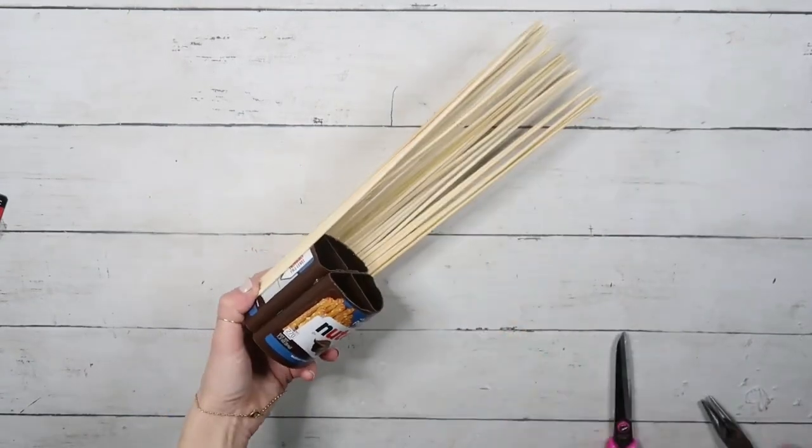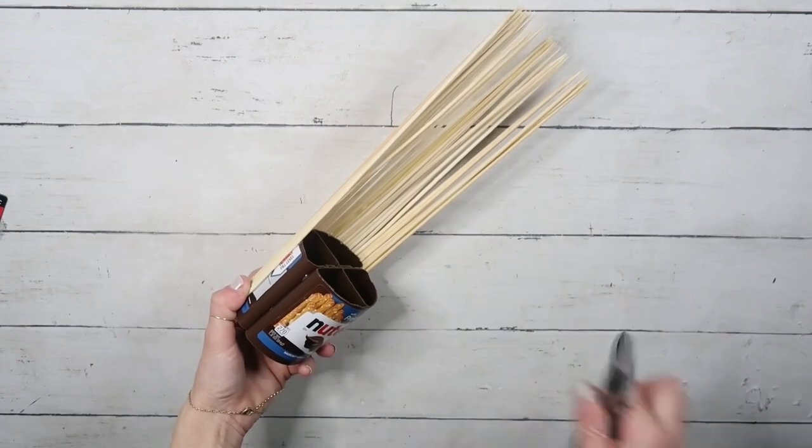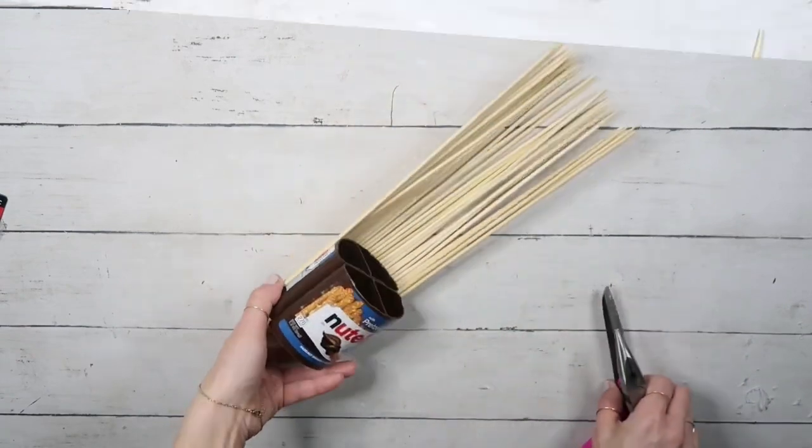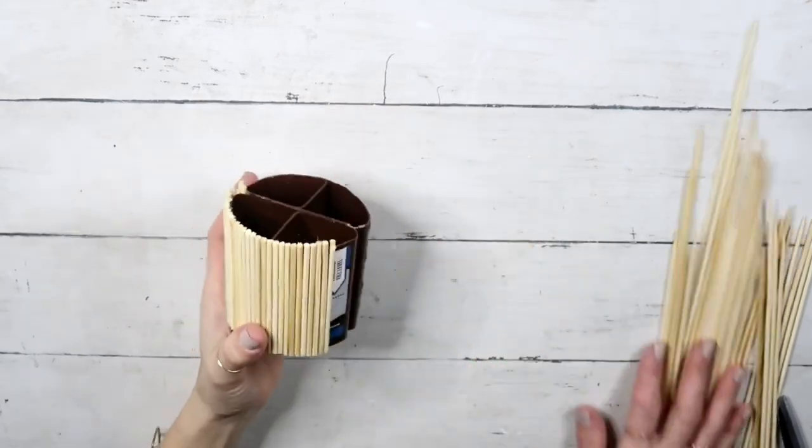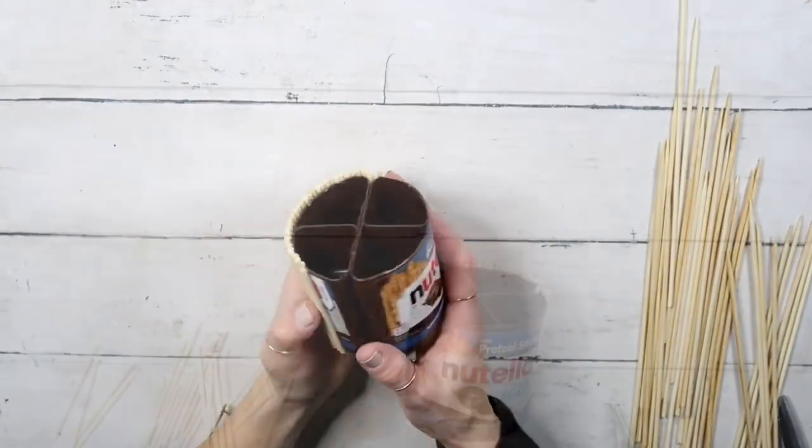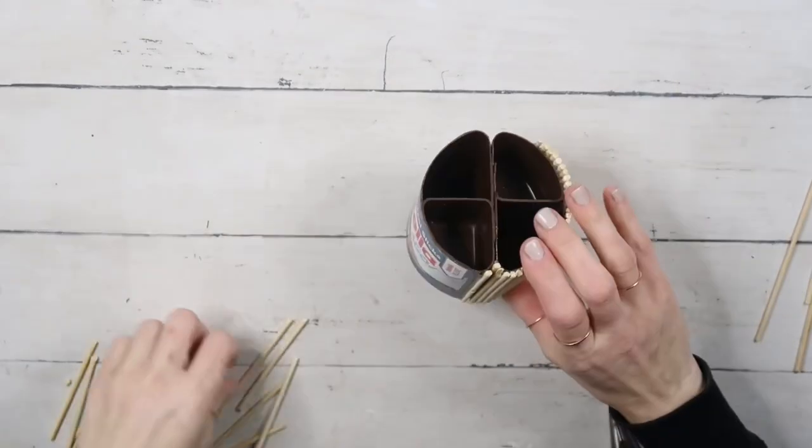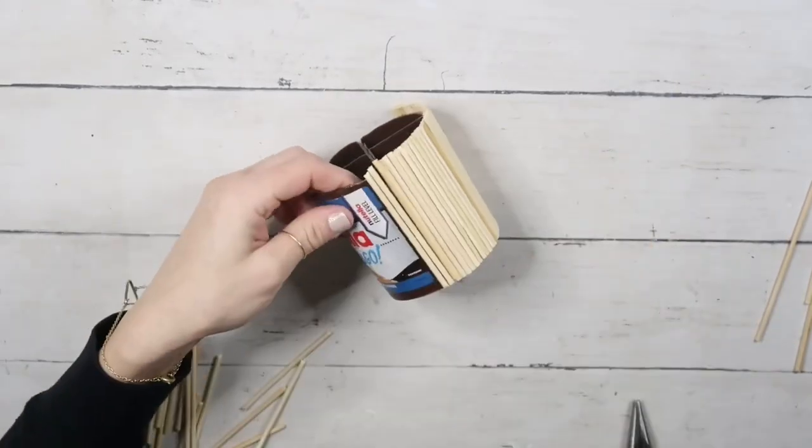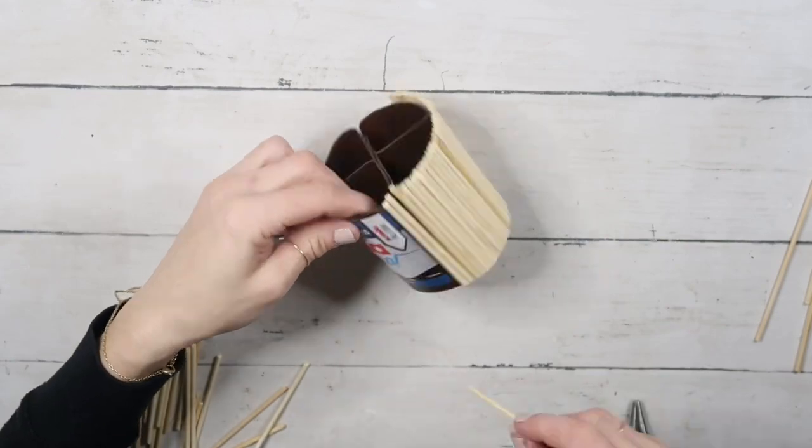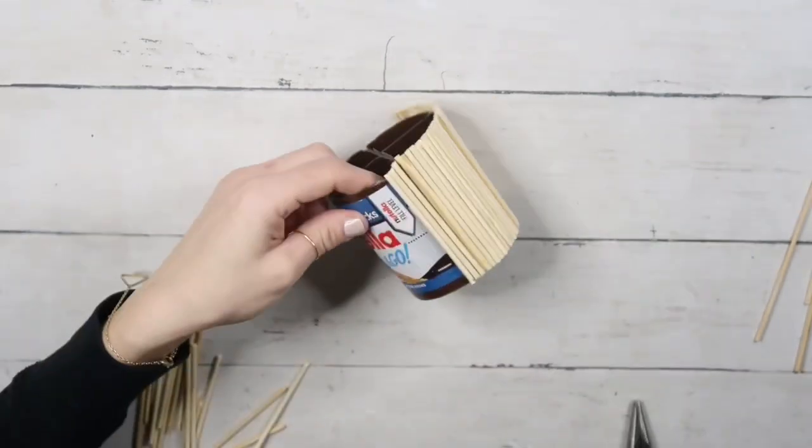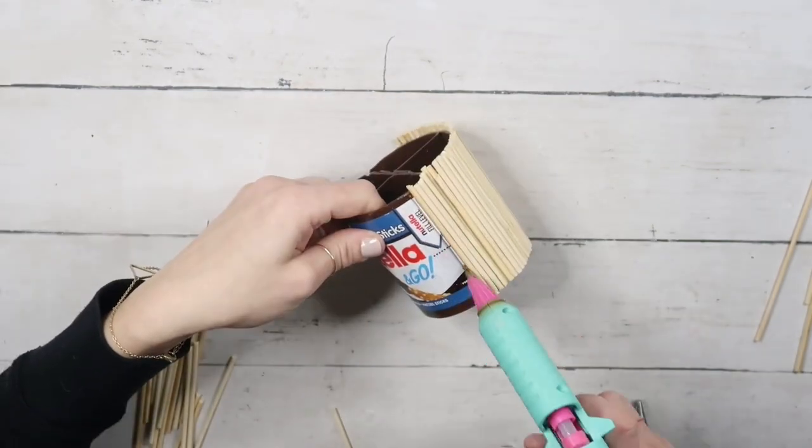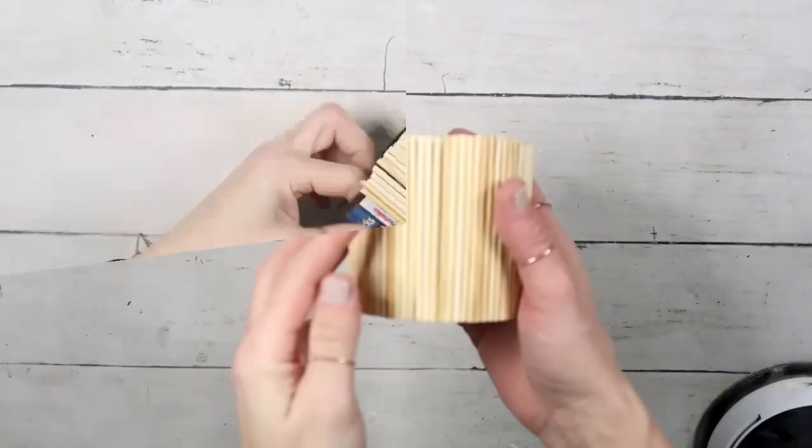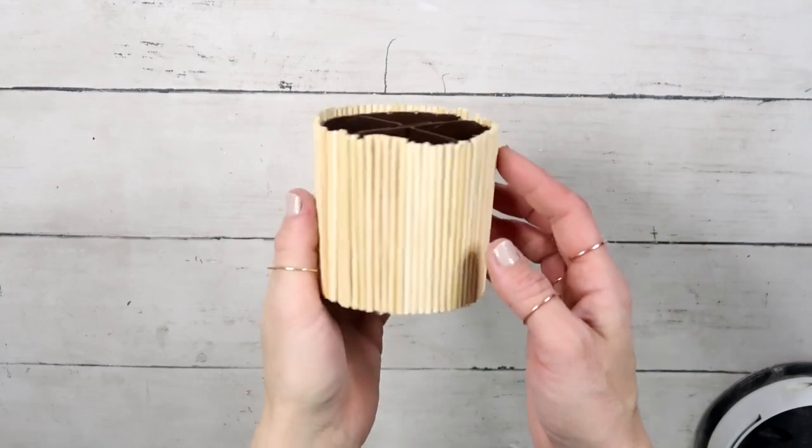This was already an open package of bamboo skewers so I did not have enough to go all the way around. After I use them all up I stopped and I'm going to cut off the excess. I ended up using exacto knife with the help of scissors. Now I'm gonna do the same thing with the rest of the bamboo skewers to fill up the rest of the container.